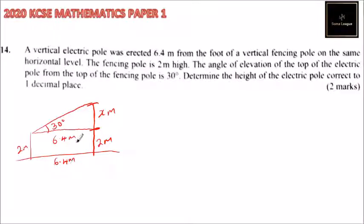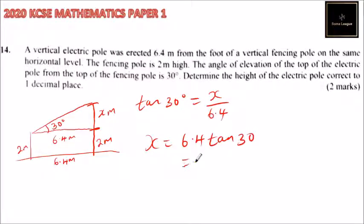Therefore we can get the tangent of 30 degrees equals x divided by 6.4. The tangent of this angle is opposite over adjacent. Therefore x equals 6.4 multiplied by the tangent of 30, which equals 3.7.